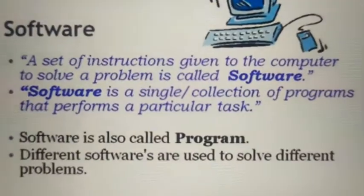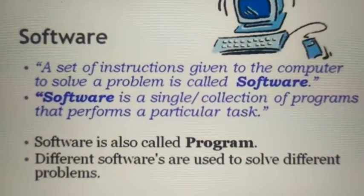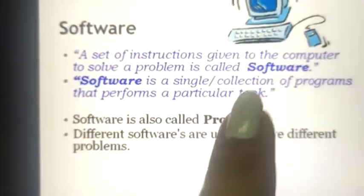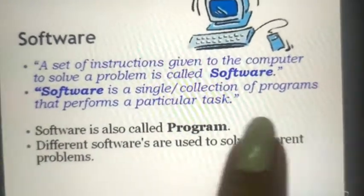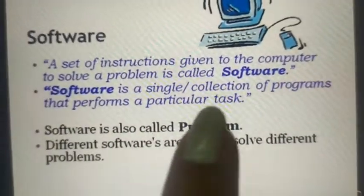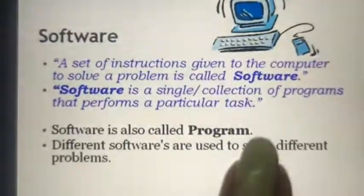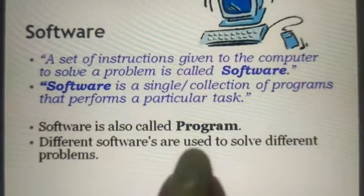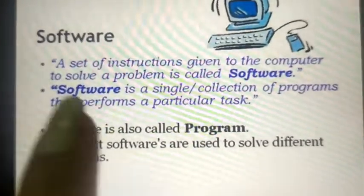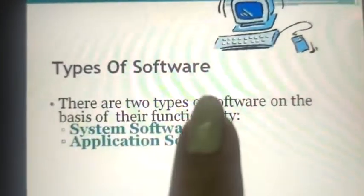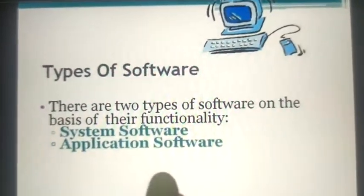What is software? A set of instructions given to the computer to solve a problem is called software. Software is a single or collection of programs that performs a particular task. Software is also called a program. Different software are used to solve different problems. There are basically two types of software: system software and application software.